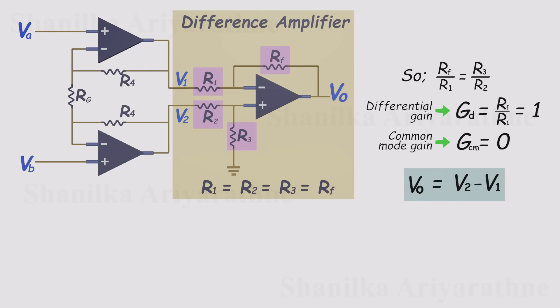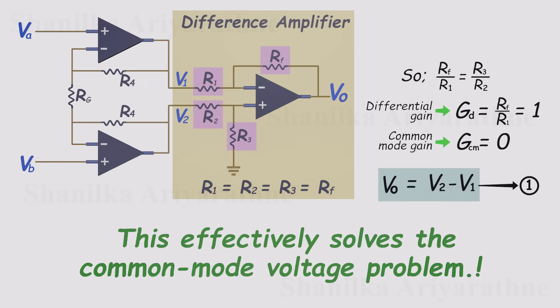The gain is one, and there are no common mode issues. Let's keep this as our first equation. We'll need it later. So, the second stage of the instrumentation amplifier reliably subtracts the two input voltages, and by doing that, it effectively solves the common mode voltage problem.